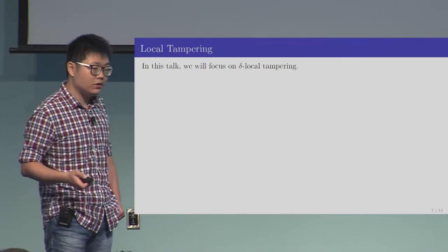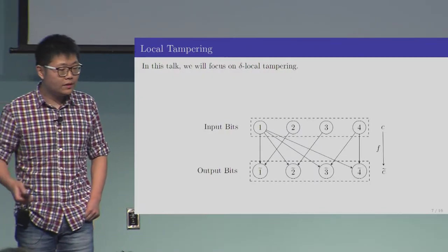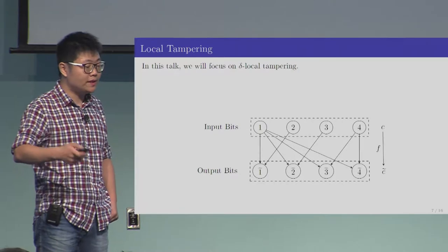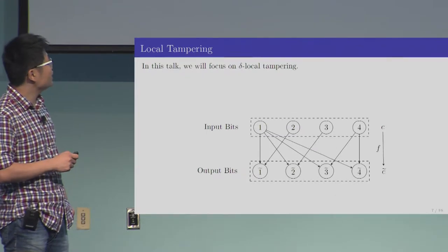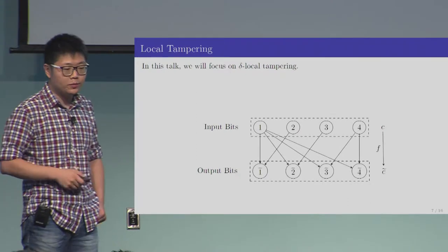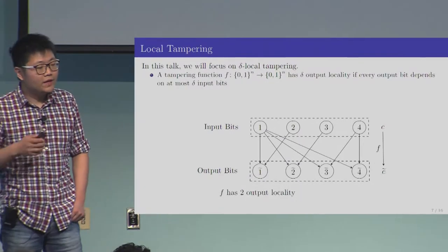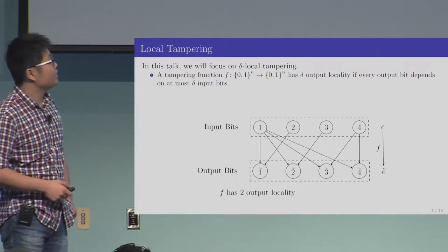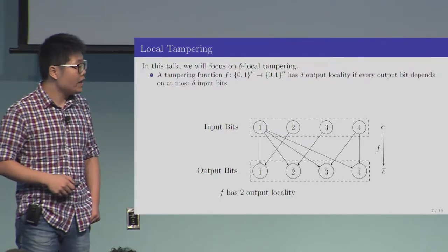Let me first tell you what local tampering is using a very simple example. Here we have a codeword that consists of four bits: one, two, three, four. This tampering function takes these four bits as input and outputs a tampered codeword. The first output bit depends only on the first and second input bits. The second output bit depends on the first and third input bits, and so on. We say a tampering function f has delta output locality if every output bit depends on at most delta input bits. Here in this example, every output bit depends on precisely two input bits, so f has two output locality.